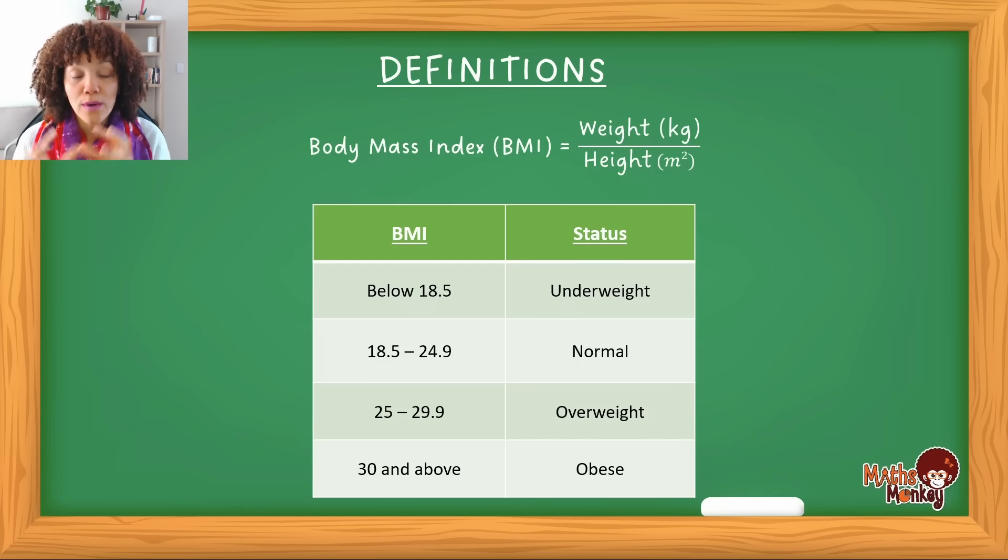And always, based on what the BMI answer actually is, will determine and classify whether that person is underweight, normal weight, overweight, or obese. That is literally the entire chapter. So I've given you an example of each now, where they give you two and they ask you to calculate the third.